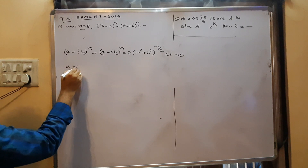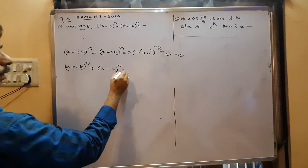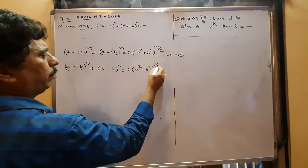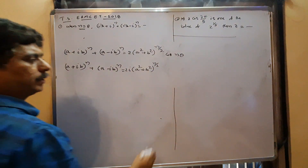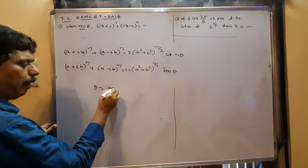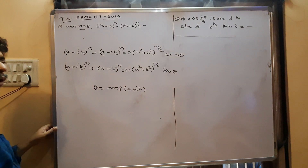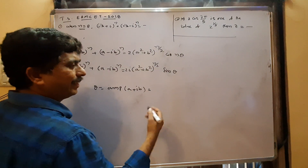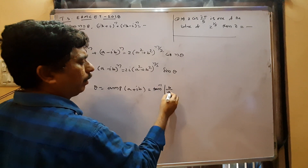This is called the mod-amplitude formula. If there is a minus between: (a + ib)^n minus (a − ib)^n, then the result is 2i times (a² + b²)^(n/2) into sin(nθ), where θ is the amplitude of (a + ib), that is tan⁻¹(|b/a|).